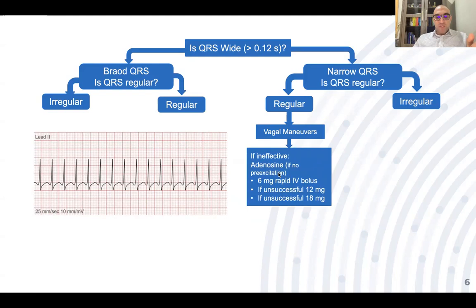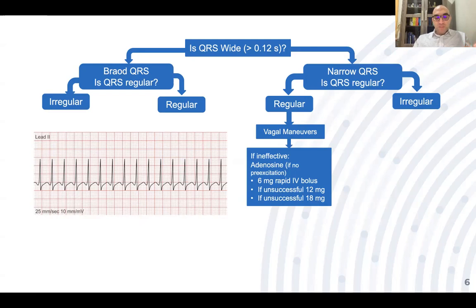After vagal maneuvers, if ineffective, consider giving adenosine. In the 2021 guidelines, we give up to three doses: 6 mg, 12 mg, and the third dose is now 18 mg — previously it was 12 mg. Because adenosine has a very short half-life, give it at the antecubital fossa vein using a three-way connection: push adenosine immediately followed by a normal saline flush and raise the limb. Before giving adenosine, ask the patient about contraindications — most importantly bronchial asthma.